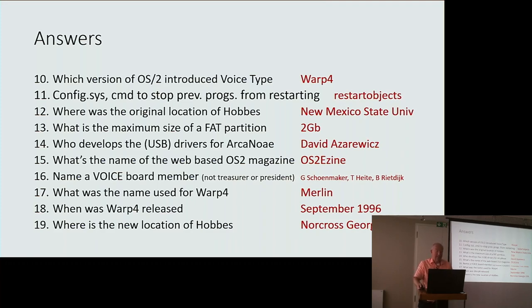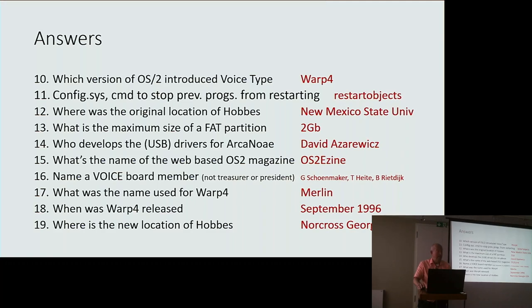Question 17: The original name for Warp 4 was Merlin. When was it released? That was September 1996 — 1996 would be acceptable. The new location of Hobbes — if you've been watching your mails you would have seen this — is Norcross, Georgia, USA. 'America' is not acceptable.